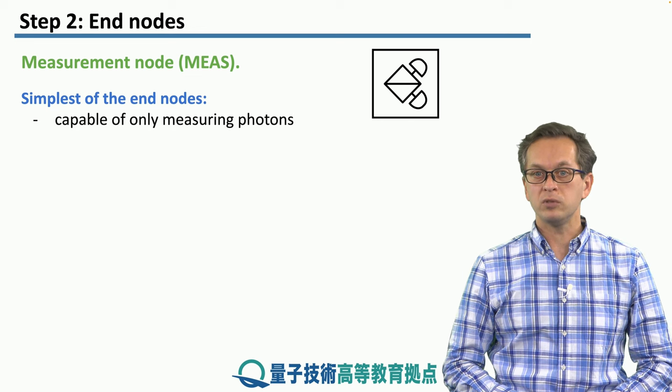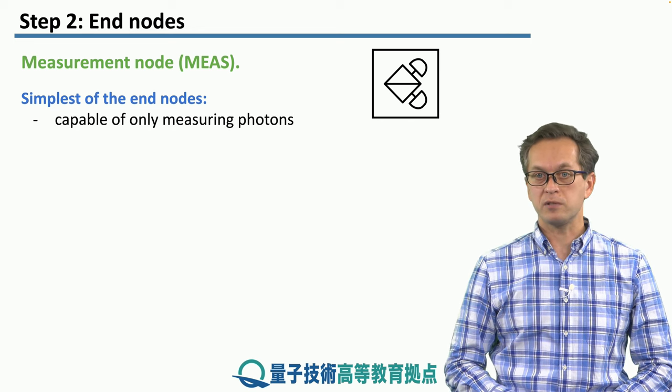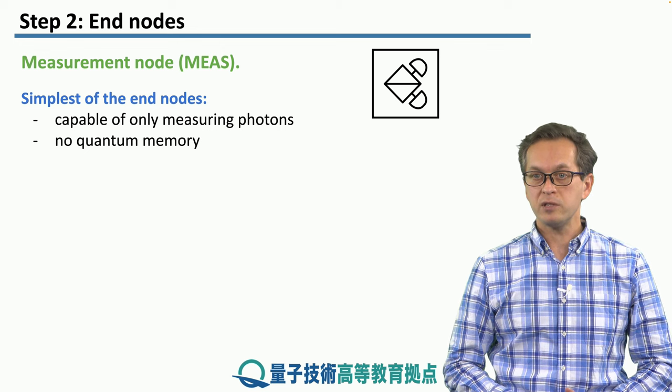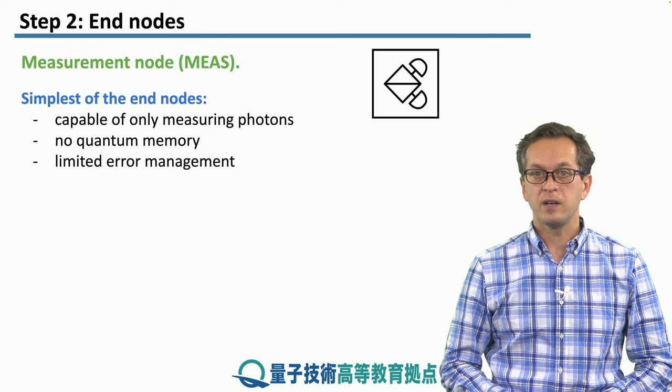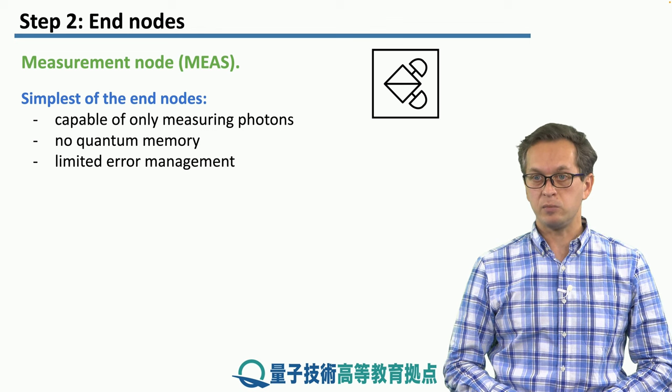And this type of node is the simplest of the quantum end nodes. All it can do is only measure photons. It's not equipped with any quantum memories, so it cannot store the information that these photons are carrying. And it's got very limited error management capabilities.